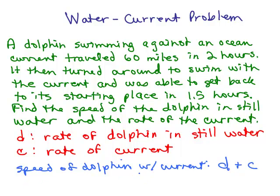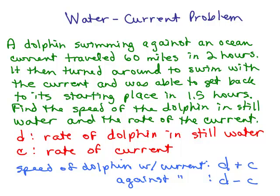It's the dolphin speed plus the little extra amount of the current, and the speed of the dolphin against the current slows down, you would take away c. Okay, we're going to use that,